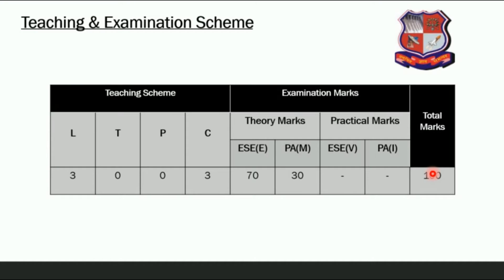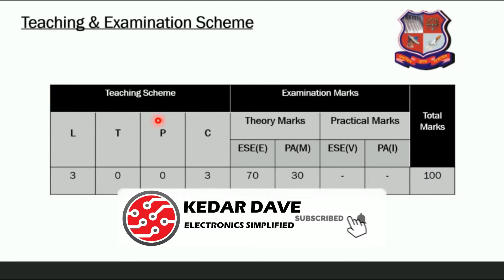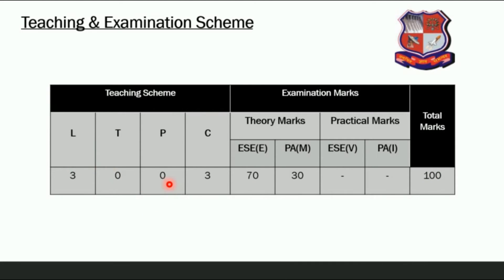The teaching and examination scheme of Industrial Electrical System is a 3-lecture scheme with no practical component. The subject credit is 3. The theory examination is of 70 marks and progressive assessment is of 30 marks, making the overall total 100 marks. Now let's get into the syllabus of Industrial Electrical System.